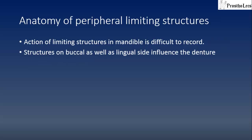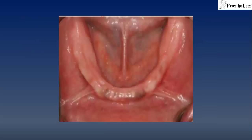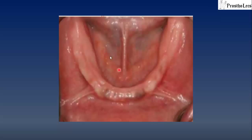Anatomy of peripheral limiting structures: the action of limiting structures in the mandible is difficult to record. Structures on both the buccal and lingual sides influence the denture. Buccally, we see the presence of the sulcus and frenum. Lingually, we see the floor of the mouth and the lingual frenum. The floor of the mouth is very dynamic in nature and creates a challenge for the dentist to record the lingual border.